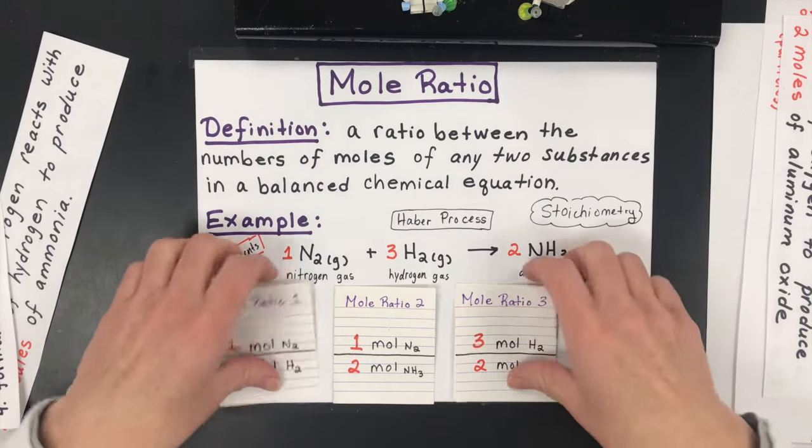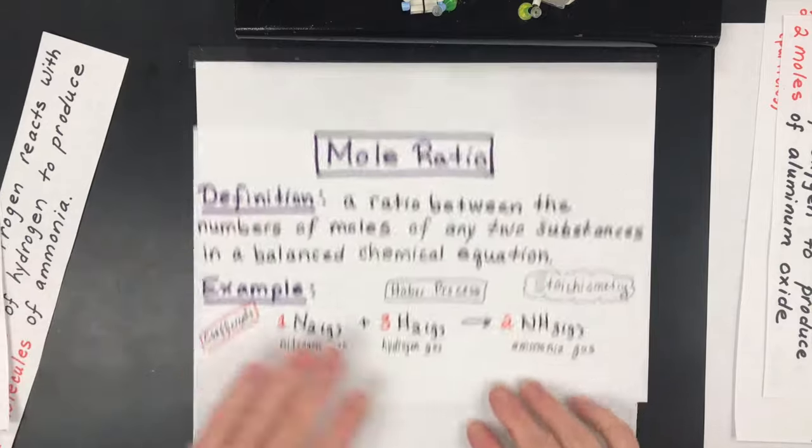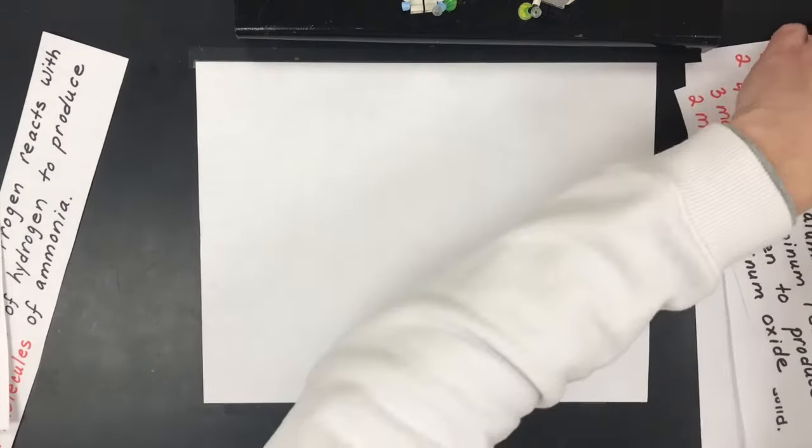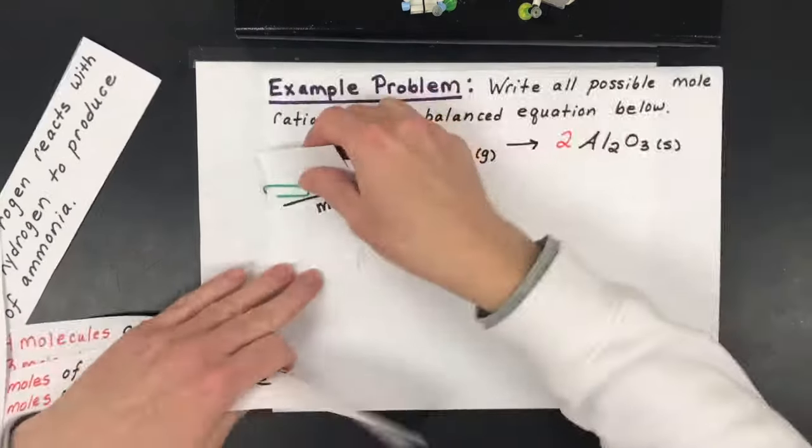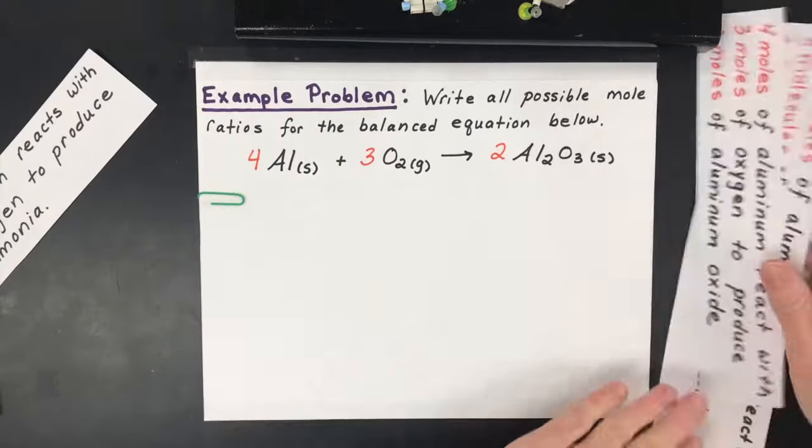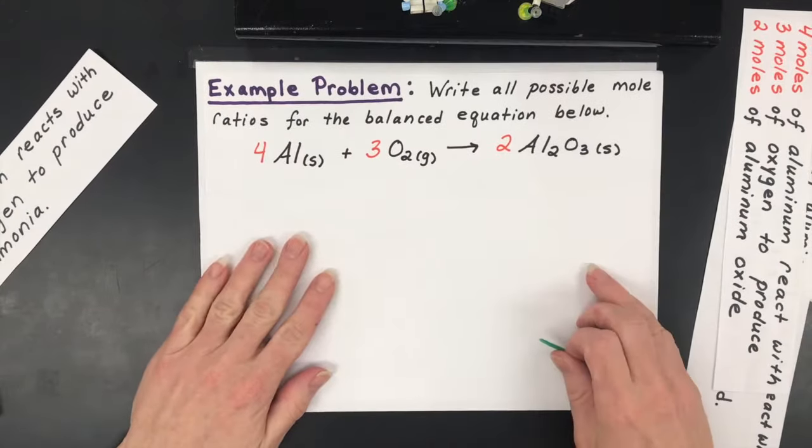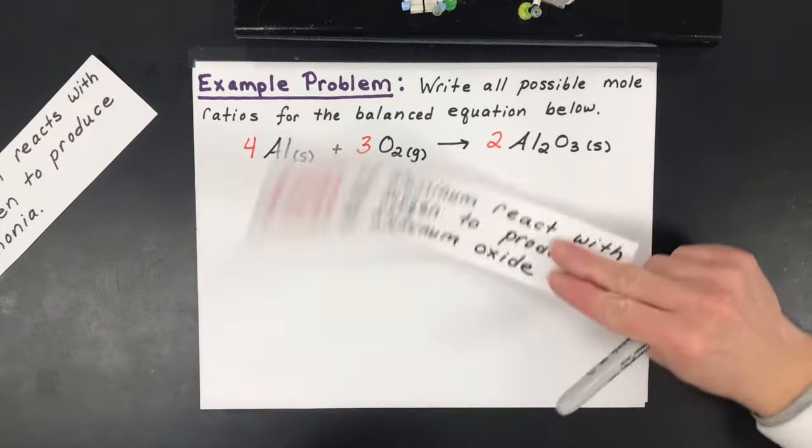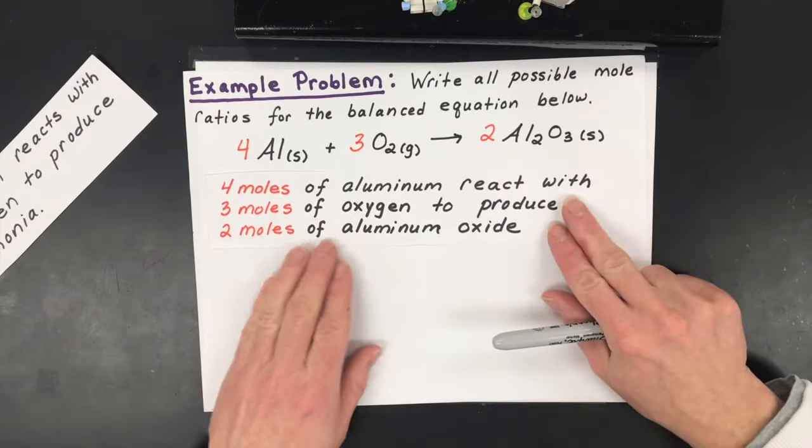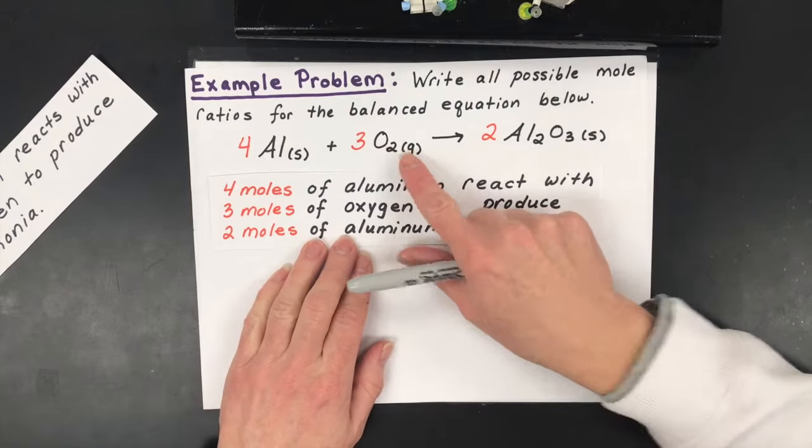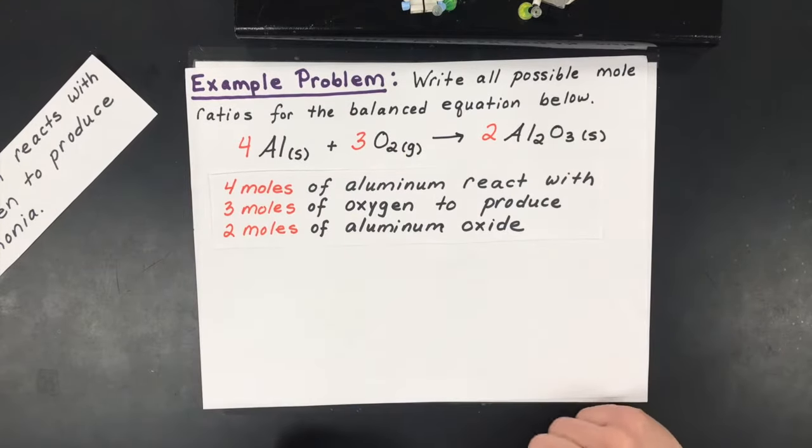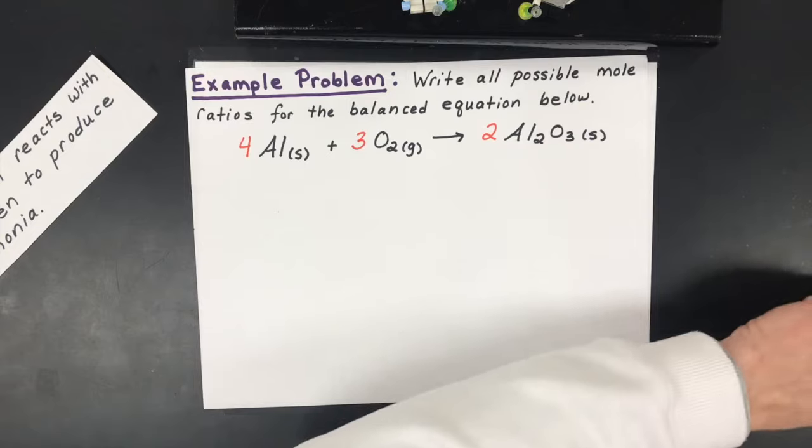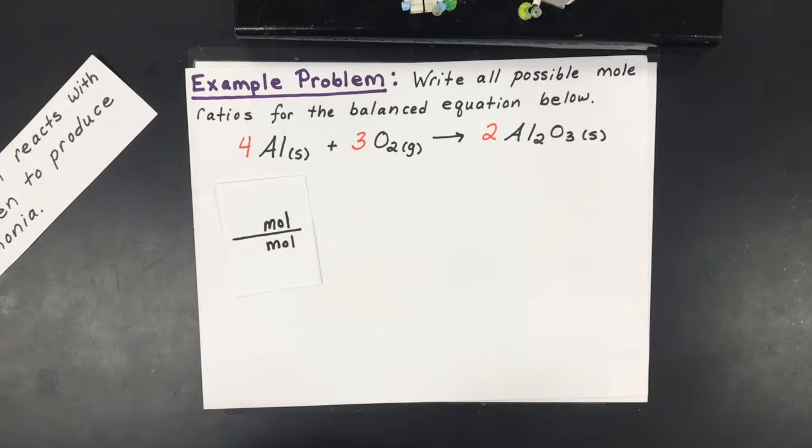So let's work through a practice problem and let you try to come up with the right answer before I tell you. So here is our reaction that we're going to do together as a practice problem. We're going to try to write all the possible mole ratios for this balanced equation. They're going to react four moles of aluminum with three moles of oxygen to make two moles of aluminum oxide. All right, so here we go. Let's try to do one ratio first.